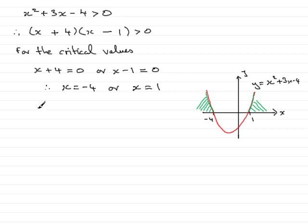So from the graph, therefore from the graph, what we see is that x has to be any value less than minus 4, or x has to be any value more than 1. OK?